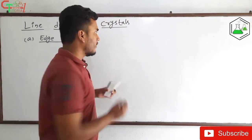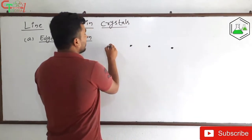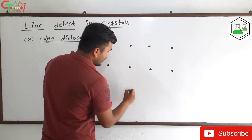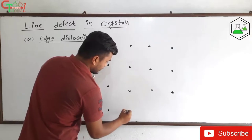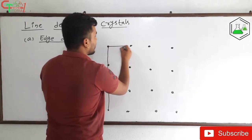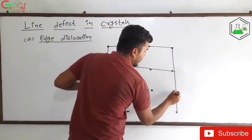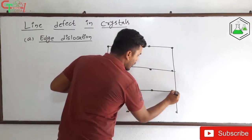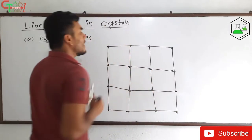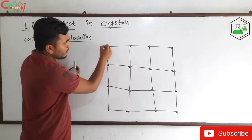Let's understand this with a diagram. The ideal or perfect crystal has atoms arranged in a proper way — the atoms are in their crystal lattice, that is, their lattice site. The lattice site is like the home of atoms in a crystal. This is the ideal crystal.